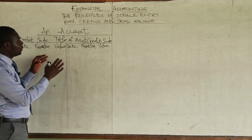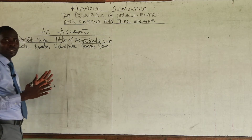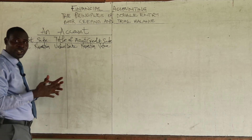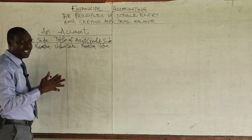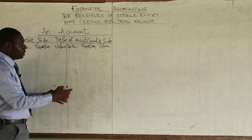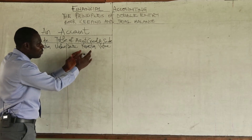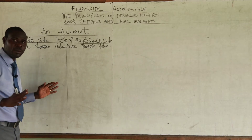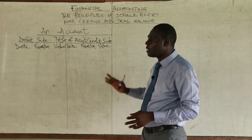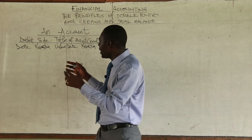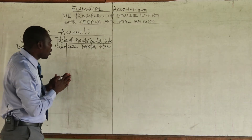For instance, if motor vehicle is the title of an account, we don't write 'motor vehicle' in its narration column. Similarly, we don't write 'capital' in the capital account. If the owner introduced cash into the business, you write 'cash'; if it's a motor vehicle, you write 'motor vehicle' — the corresponding account title goes in the narration.